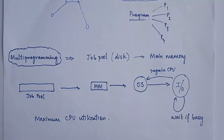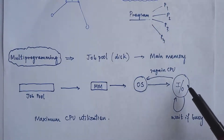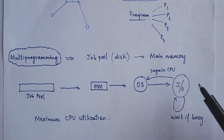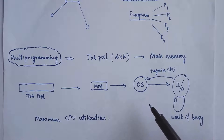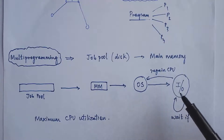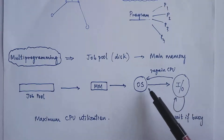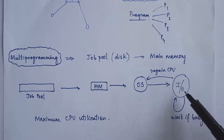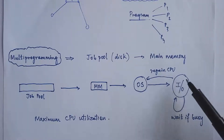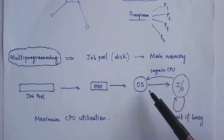Say the process has completed some portion of its execution and it now requires IO to progress further. It wants IO, but the IO device is currently being used by some other process. Since it requires IO for any progress to be seen in its execution, but the IO device is not free, that process must wait for the IO device to become free. Once it becomes free the process can access those IO devices, but since they are not free, the process is currently in a waiting state.